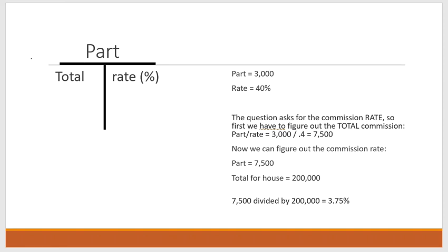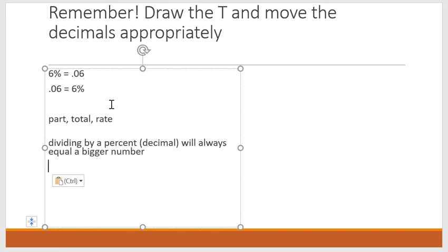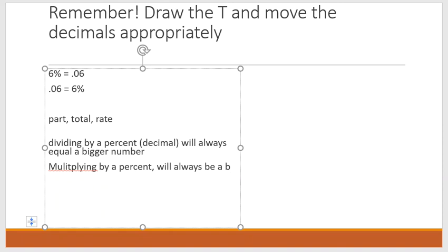I hope that helped with those word problems. Remember to draw out that T, write down what you have — which will either be the part, the total, or the rate — and make sure you move your decimals appropriately. Anytime you see those three words — part, total, rate — figure out which two you have, draw your T, and you know what to divide by what. Dividing by a percent will always equal a bigger number; multiplying by a percent will always equal a smaller number.